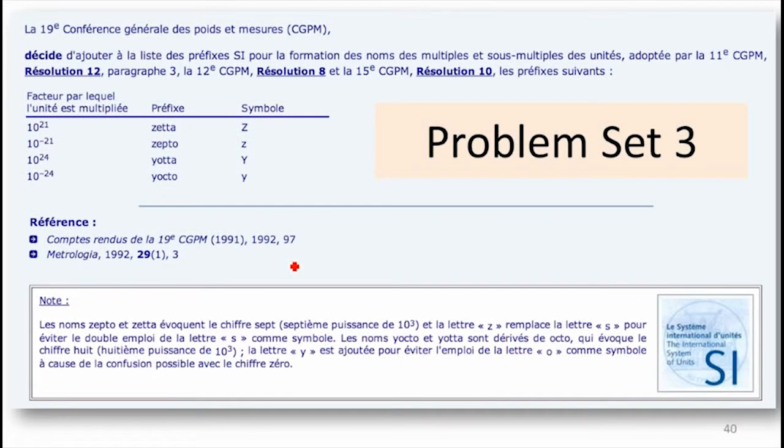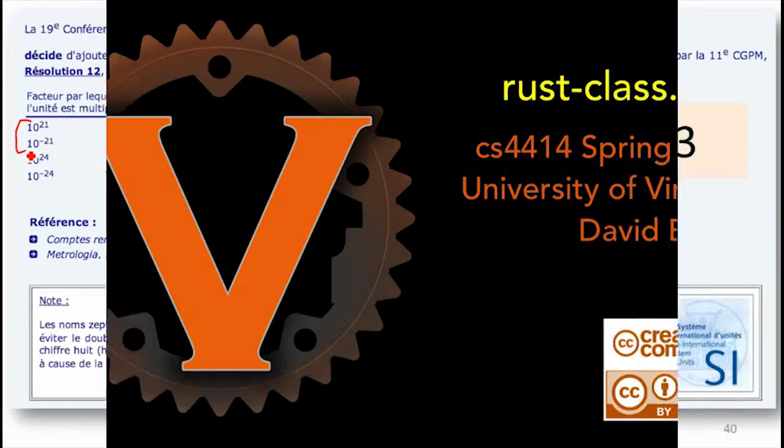I am just about on time. So we'll have time to make teams for problem set three. Those of you who can read French can read about the metric prefixes that were introduced in 1991. So your web server should be about 10 to the 42 times better than what you did for problem set one. If it's only about 10 to the 40 times better, that's still probably good enough.